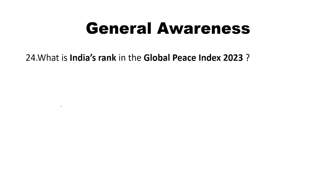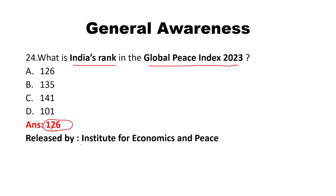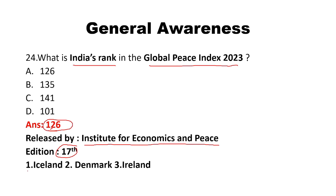What is India's rank in the Global Peace Index 2023? The answer is 126. The Global Peace Index is an annual report released by the Institute for Economics and Peace. The 2023 edition is the 17th edition. The top three countries are: Iceland (1st), Denmark (2nd), and Ireland (3rd). India's position is 126.